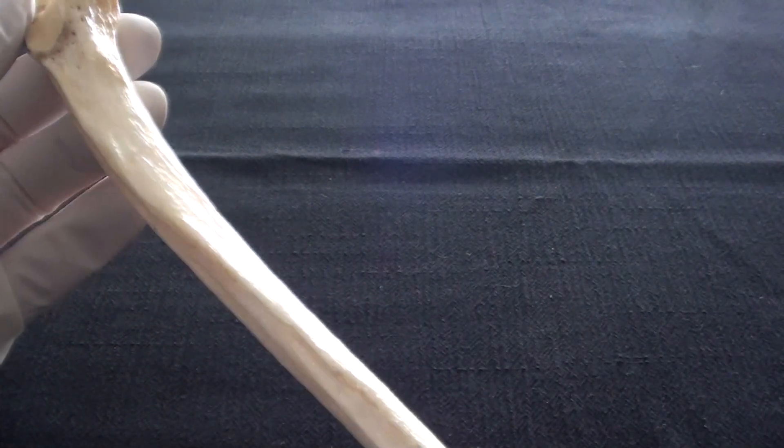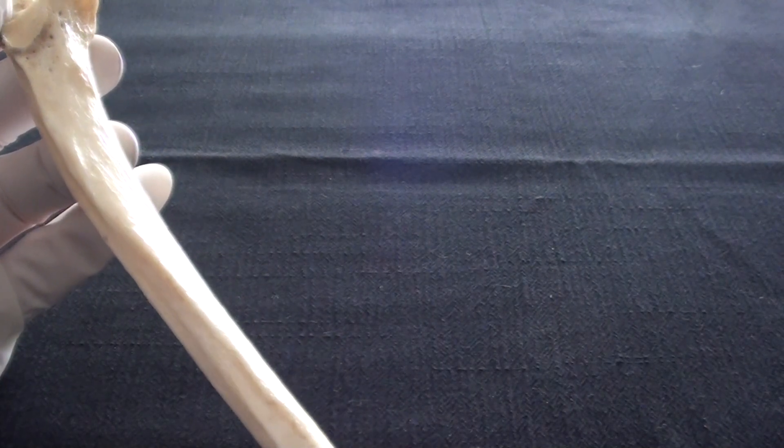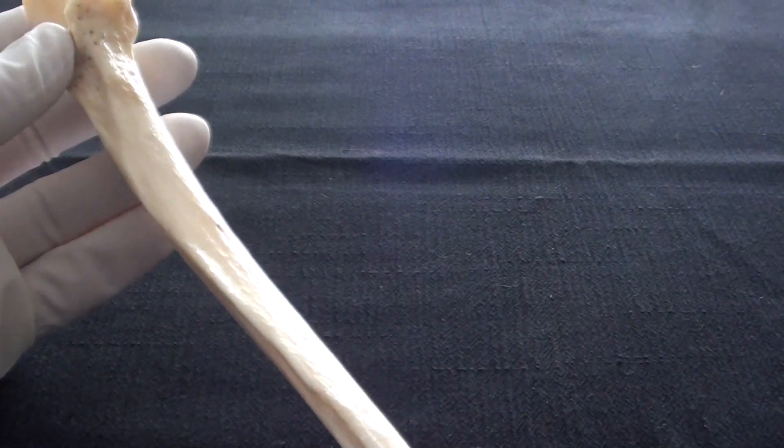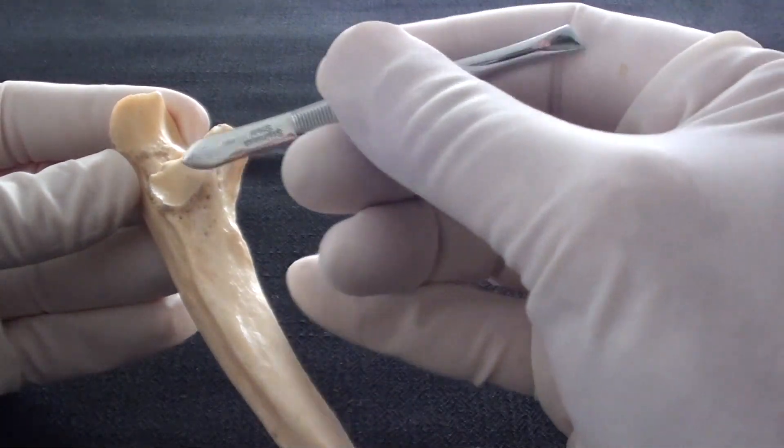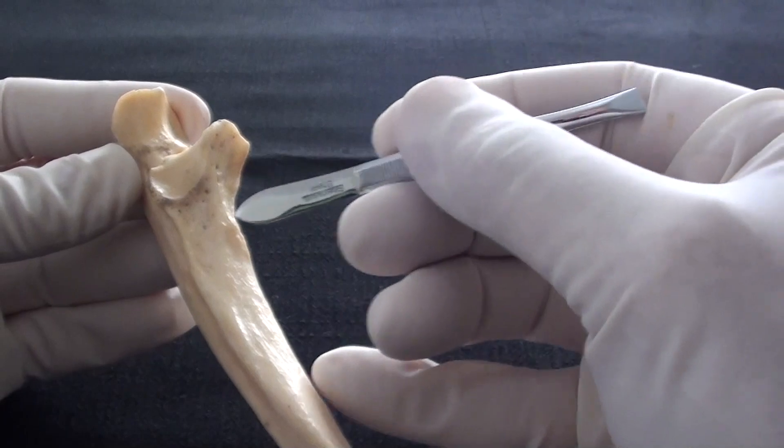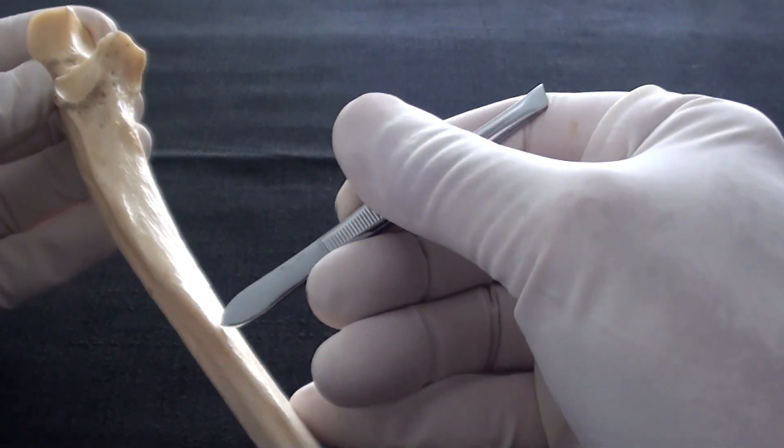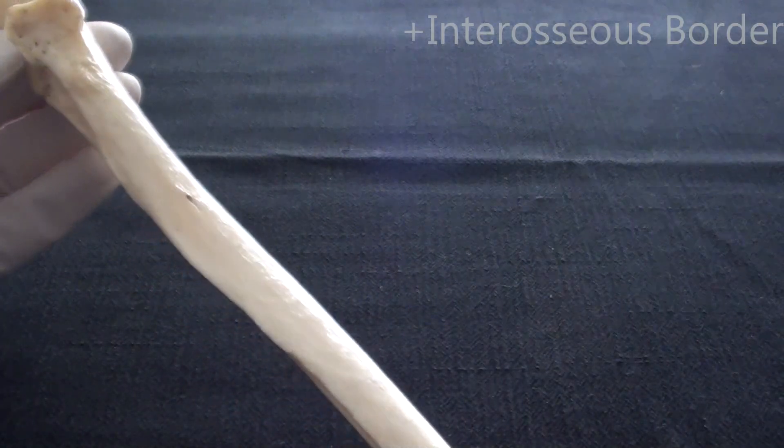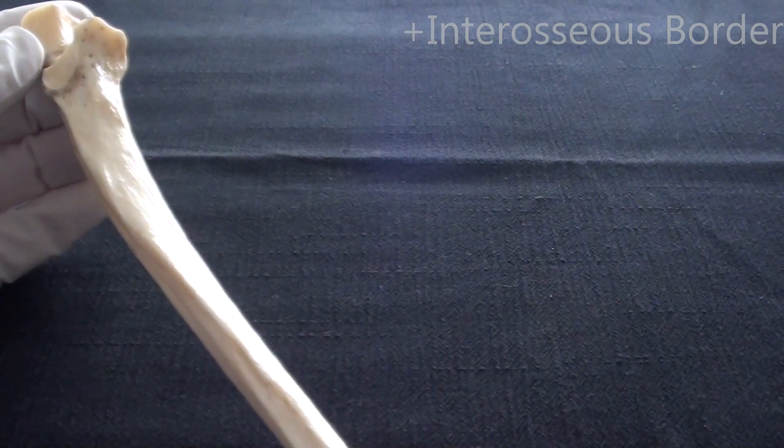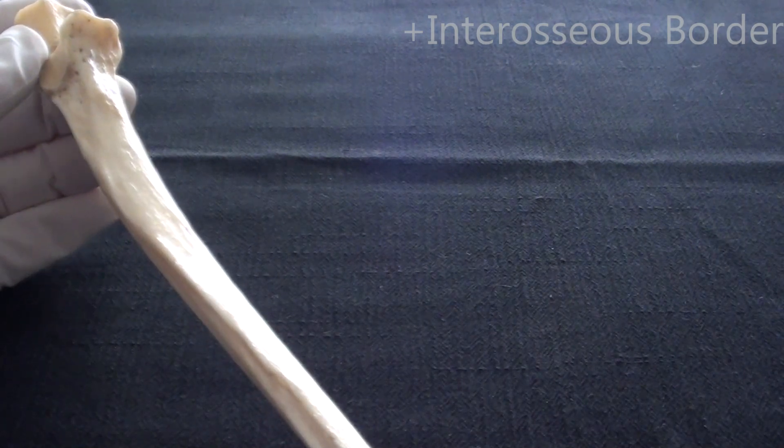The ulnar shaft is not completely cylindrical. We're going to see a couple of interesting ridges. One of them which I'm trying now to put into focus is a margin that is oriented laterally. We can see here the radial notch of the ulna, supinator fossa, and inferior to the supinator fossa there will be this very sharp bony edge which is called the interosseous border of the ulna. Needless to say, that is the attachment point for the interosseous membrane that will connect shafts of the radius and ulna.